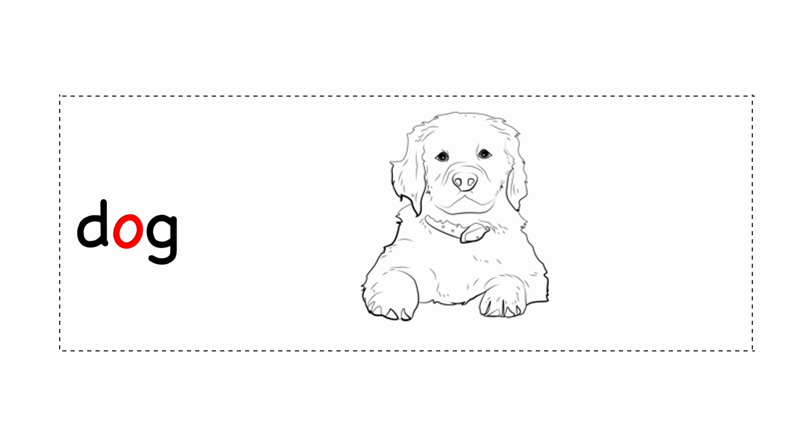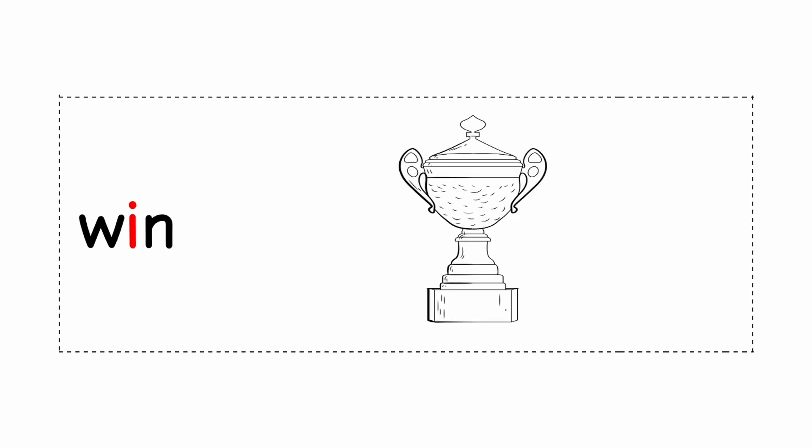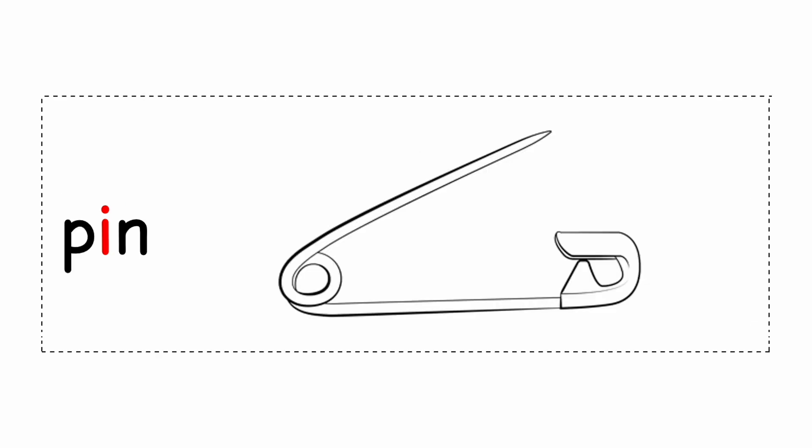D, O, G — dog. W, I, N — win. P, I, N — pin.